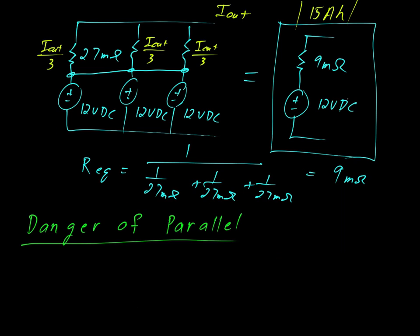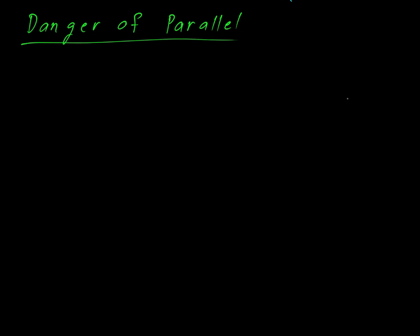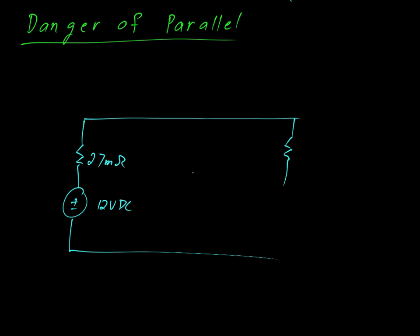Moving on, let's talk about the dangers of paralleling batteries. And for this discussion, let's assume that you've done something silly like connect a 6 volt battery in parallel with a 12 volt battery. So we'll keep our PB5-12 battery, which you'll recall had a 27 milliohm resistance and a nominal 12 volt DC voltage source. And we're going to connect this up with a PB5-6, which is a slightly smaller 6 volt battery.